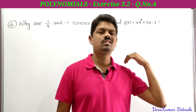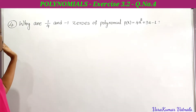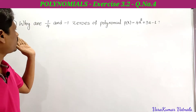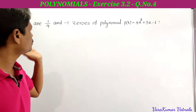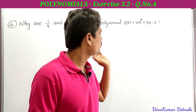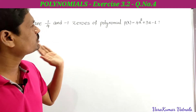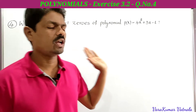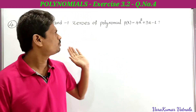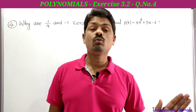See here what he is asking — to find why 1/4 and -1 are zeros of the polynomial p(x) = 4x² + 3x - 1. So he has given a polynomial p(x) = 4x² + 3x - 1.